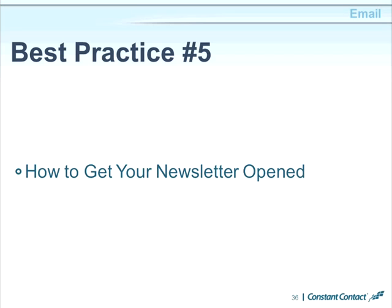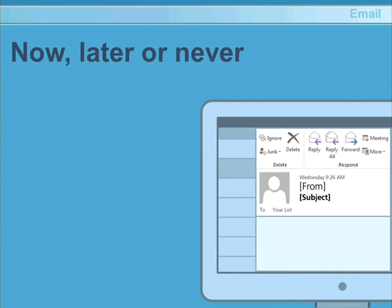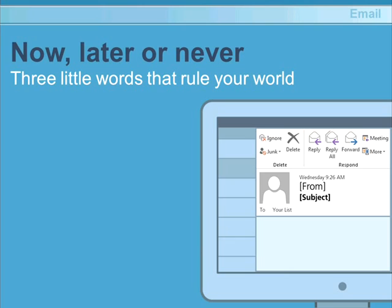Best practice number five: how do you get your newsletter opened? I want to give you insight into what works — how to get more people to stop and open your email, consider your offer, and take a measurable response. Take a look at these three words: now, later, and never. Those words can rule your world. Think about when you checked your email this morning — you were automatically sorting messages into those three categories.